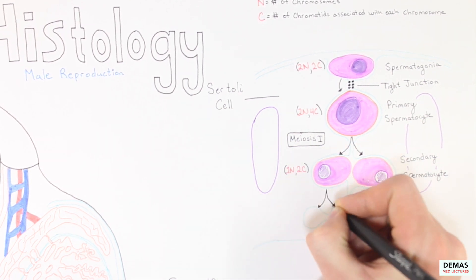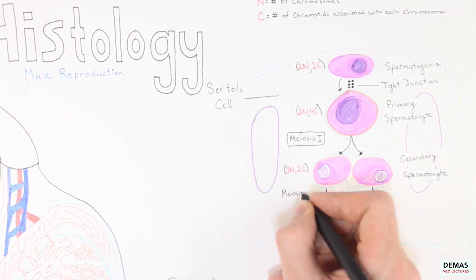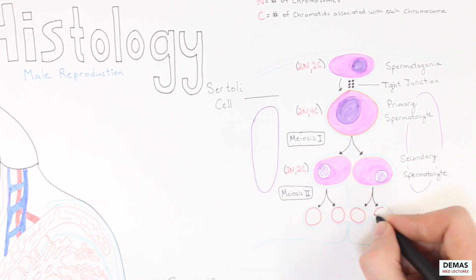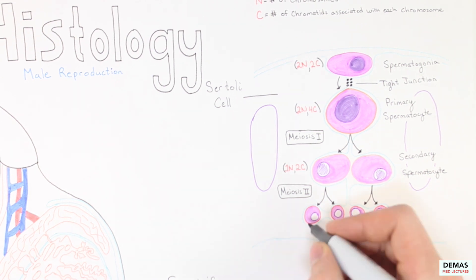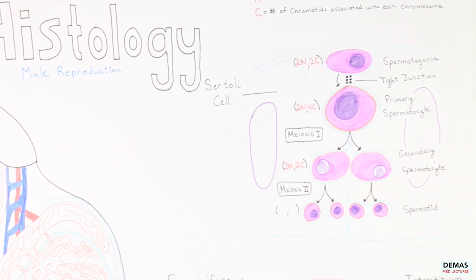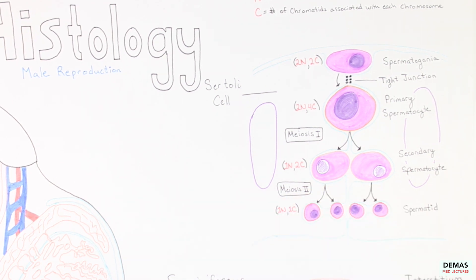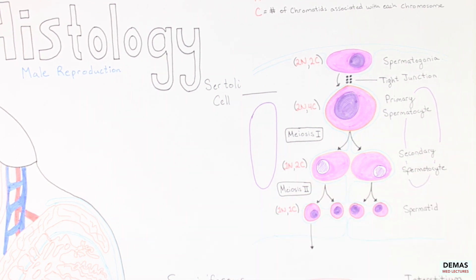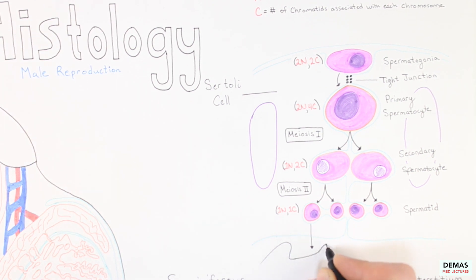Finally, the secondary spermatocytes undergo another round of division during meiosis II, forming the haploid spermatid. The spermatid is considered 1N1C. The haploid spermatids undergo some final maturation steps to form mature sperm, and then are ready for the next step, storage and transport.